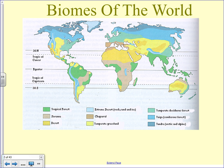The major biomes of the world are identified on this map. Our first major biome is the tropical rainforest — shown in green. The biggest rainforest in the world is the Amazon, located in South America: Colombia, Brazil, Ecuador, Venezuela, and places like that. There's also a little bit in Central America.